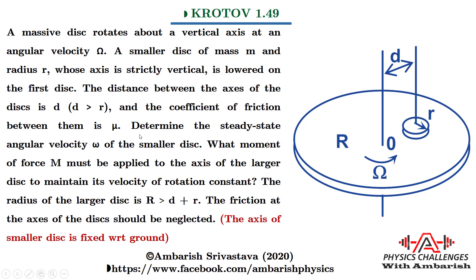Determine the steady state angular velocity omega of the smaller disc. What moment of force M must be applied to the axis of the larger disc to maintain its velocity of rotation constant? The radius of the larger disc is capital R greater than d plus r. The friction at the axis of the disc should be neglected.